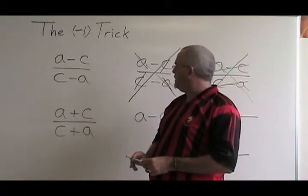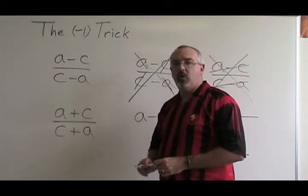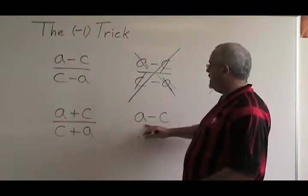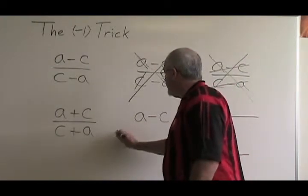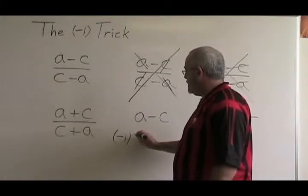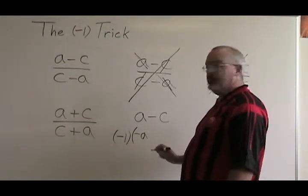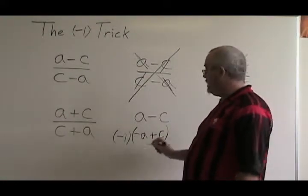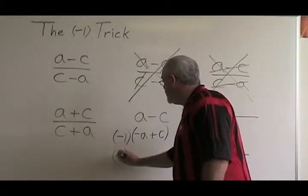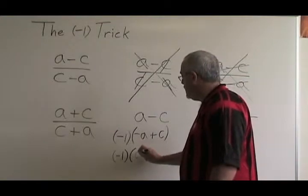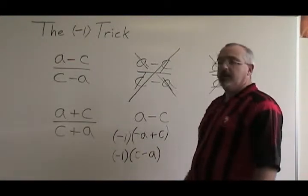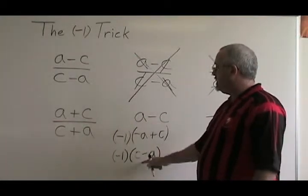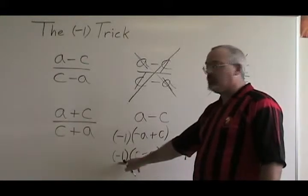So what do we do? The trick is to factor a negative one out of either the top or the bottom. When we factor a negative one out of the binomial a minus c, we get negative one times negative a plus c, which can be written backwards as c minus a. So the negative one trick allows you to write a binomial with a minus sign backwards — a minus c becomes c minus a, but only if you factor out the negative one.